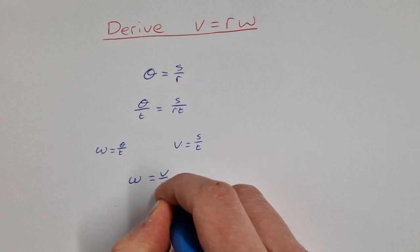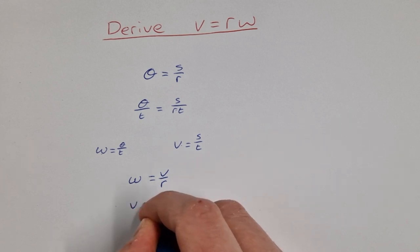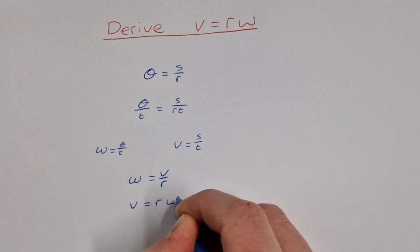v over r and then I just need to multiply across by r and rearrange to get v is equal to r omega as required.